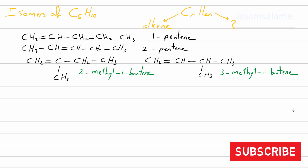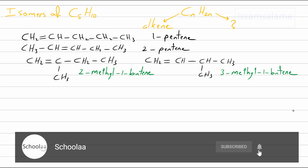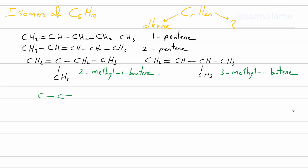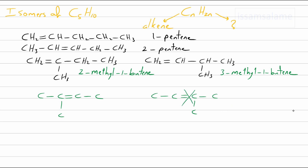Now let's try changing the location of the double bond in that butene. Since we cannot locate the branch at the end carbons, we end up with two possibilities. But in both cases we will have the same name, because on the one on the left we start counting from the left side, and on the one on the right we start counting from the right side. In both cases the methyl and the double bond are at the same carbon — the second one. So let me erase these.